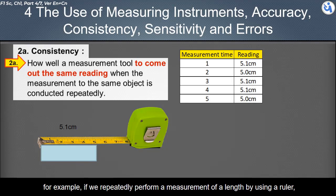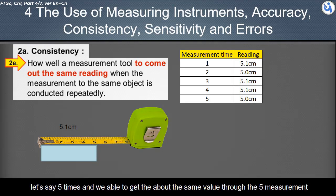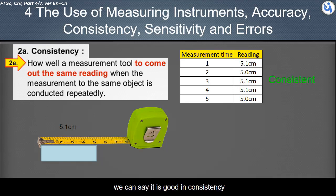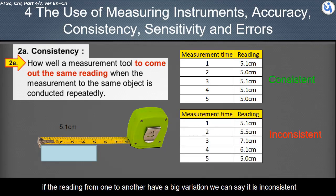For example, if we repeatedly perform a measurement of a length by using a ruler five times, and we able to get the about the same value through the five measurement, we can say it is good in consistency. If the reading from one to another have a big variation, we can say it is inconsistent.